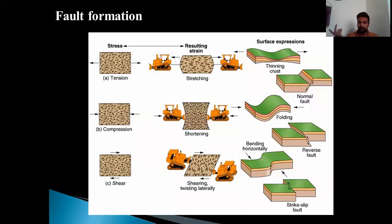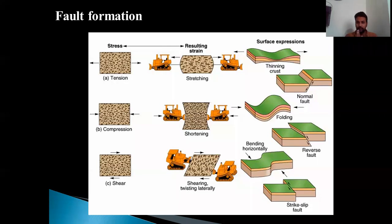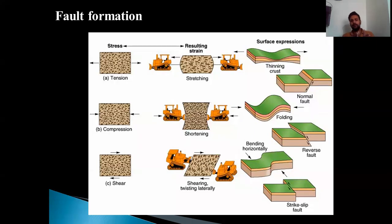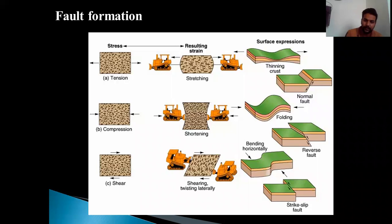Now, if the stress does not overcome the elastic or plastic limit, the fold will remain as it is. But if compression continues, it will cross the plastic limit and ultimately brittle deformation will happen — there will be a break in the bed and ultimately you will get a reverse fault. Similarly, where there is shear stress, the results are entirely different — you can see a strike-slip fault. It ultimately depends upon what kind of stress is applied on the rock body, and the resultant outputs will be different.